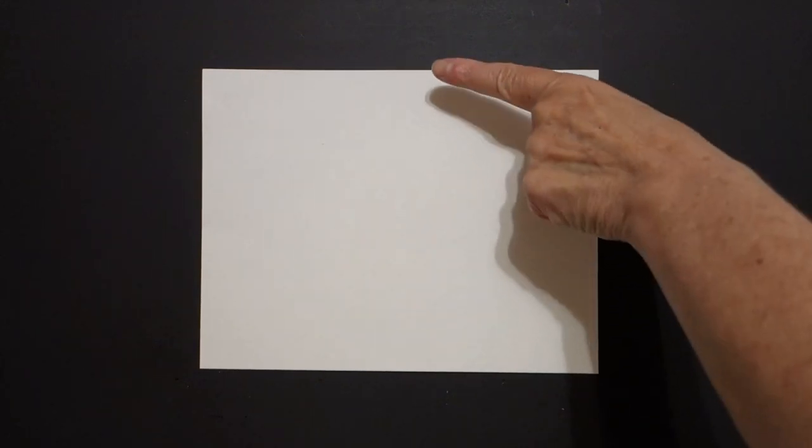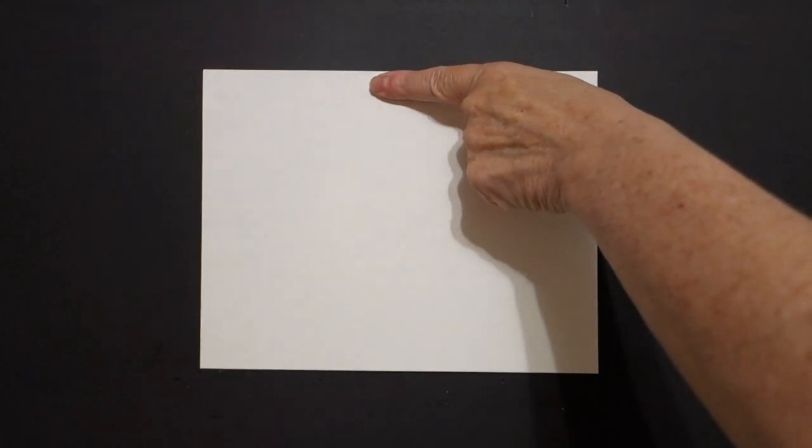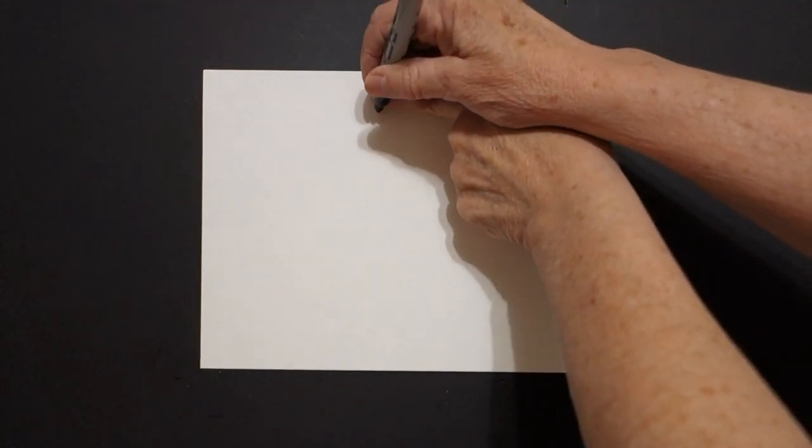Today's project is how to draw Devil's Tower, a landform in Wyoming. I take one finger right here in the center and underneath I'm going to put a dot.